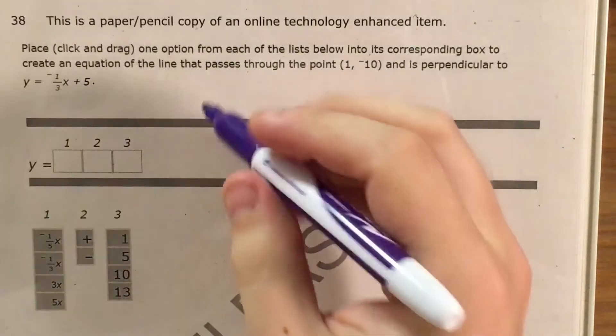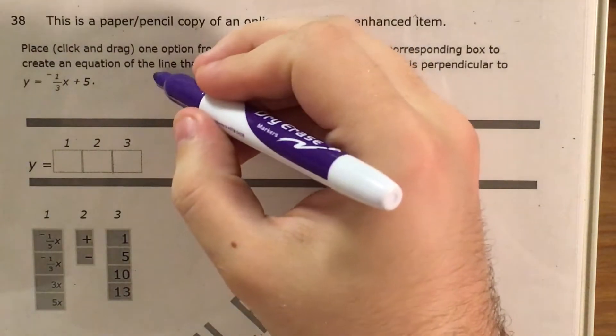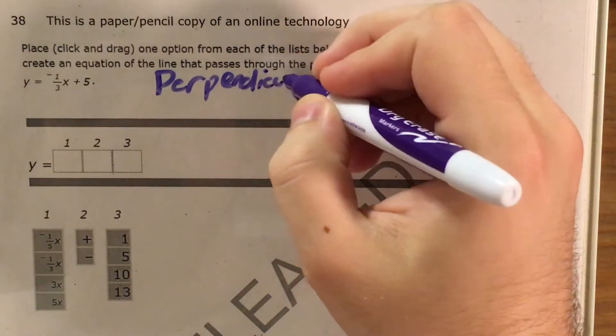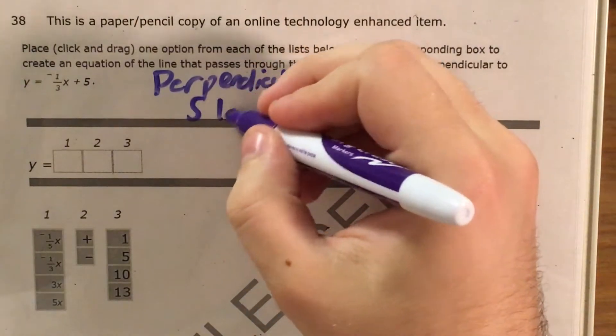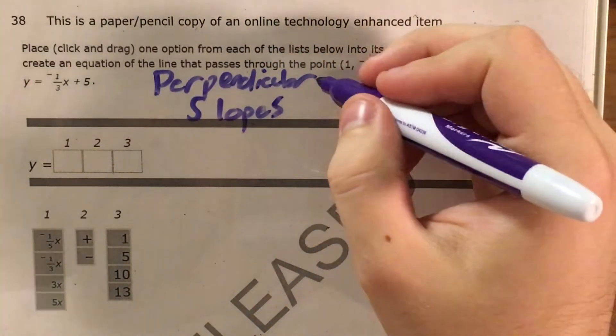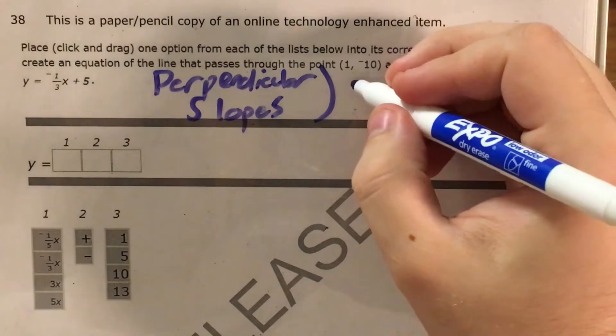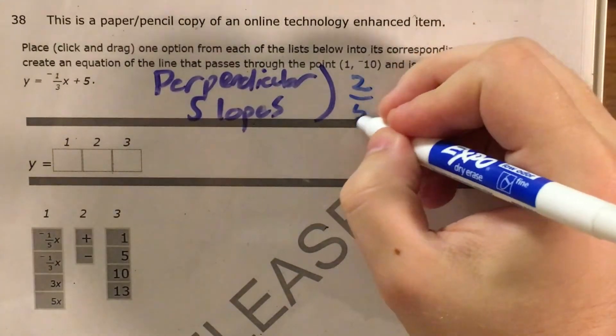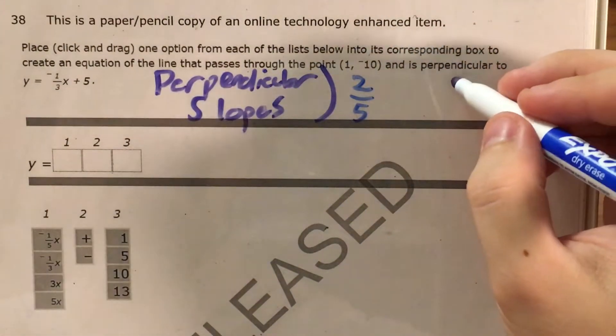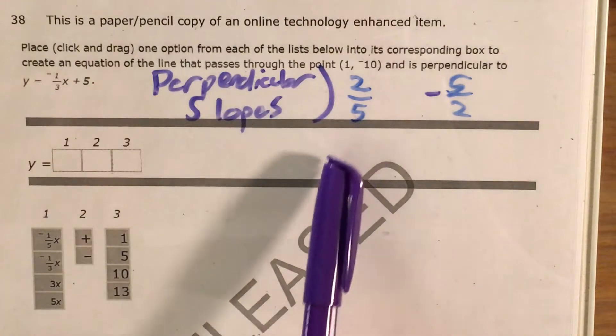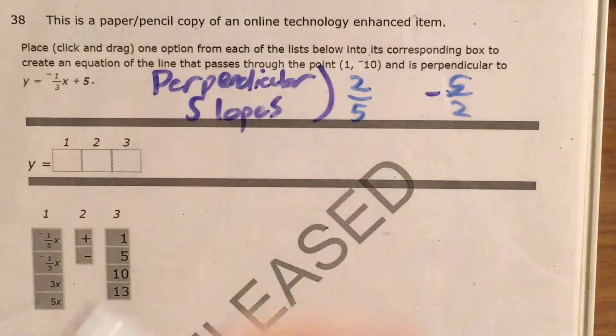So let's go ahead and just get started by reviewing perpendicular slopes. In order for you to know that two slopes are perpendicular or in order for you to get one and find the other, essentially, let's say I start with 2 fifths. I need to flip that fraction over and then if it's positive, I make it negative. If it's negative, I make it positive. So 2 fifths becomes negative 5 halves. That's one example.